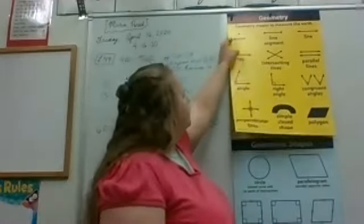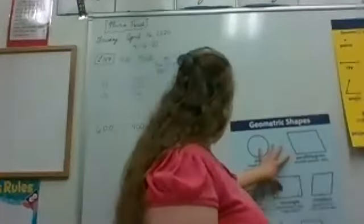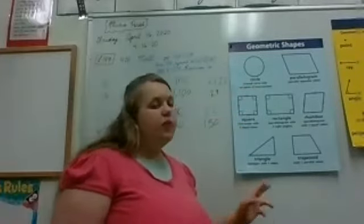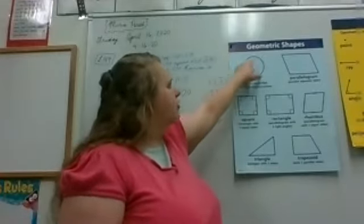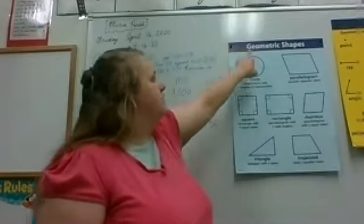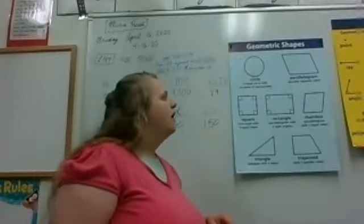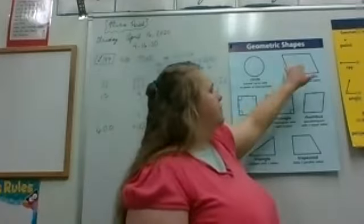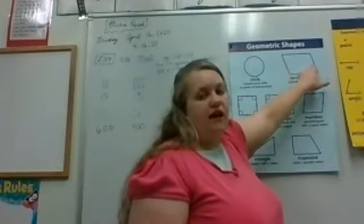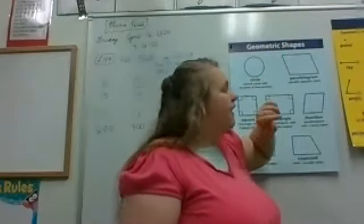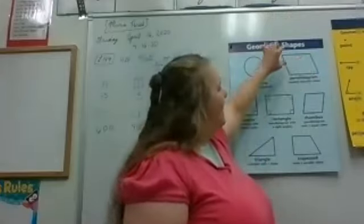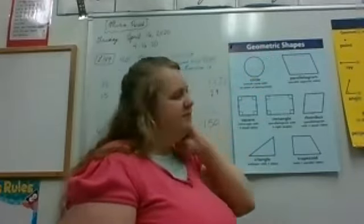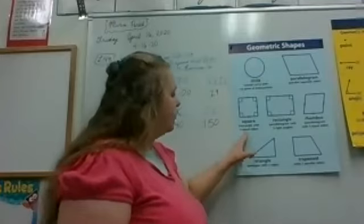Perpendicular lines intersect and form right angles — you get four right angles with perpendicular lines. A circle is a closed curve with no point of intersection; it's just one continuous line. A parallelogram has opposite sides that are parallel — this line is parallel to this line, and these two lines keep going without intersecting.